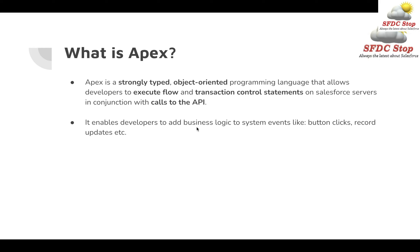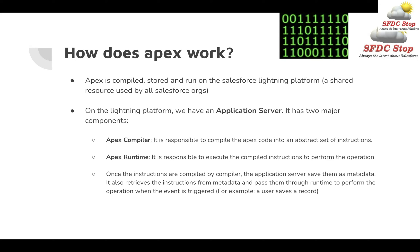It enables you to add business logic to system events which are already happening in your system. The question is, how does Apex work? Apex is compiled, stored and run on the Salesforce Lightning Platform, which is a shared resource used by all Salesforce orgs. Compile is the process of converting human-readable code into machine-readable code. Whatever code you write will be converted into machine code so that it can be understood by the Lightning Platform, and then it will execute the actions.